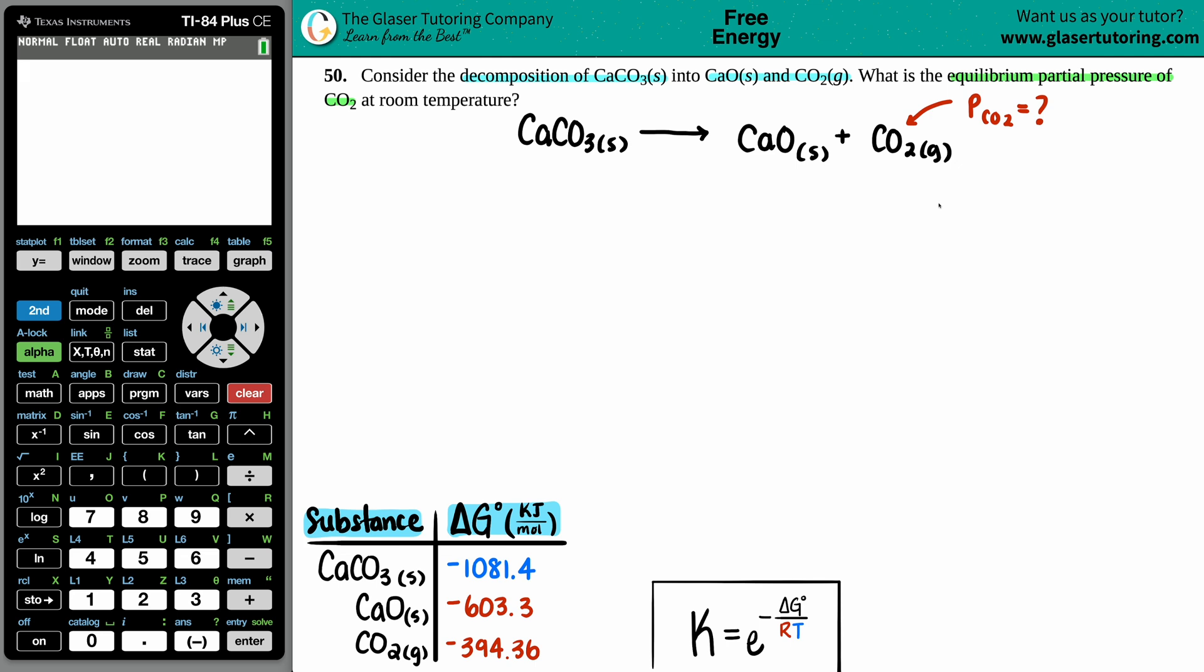In this case, since we're solving for the pressure, I have to know what the Kp is. P stands for pressure. And remember, any equilibrium constant is always products divided by reactants, and remember only gases and aqueous are allowed.